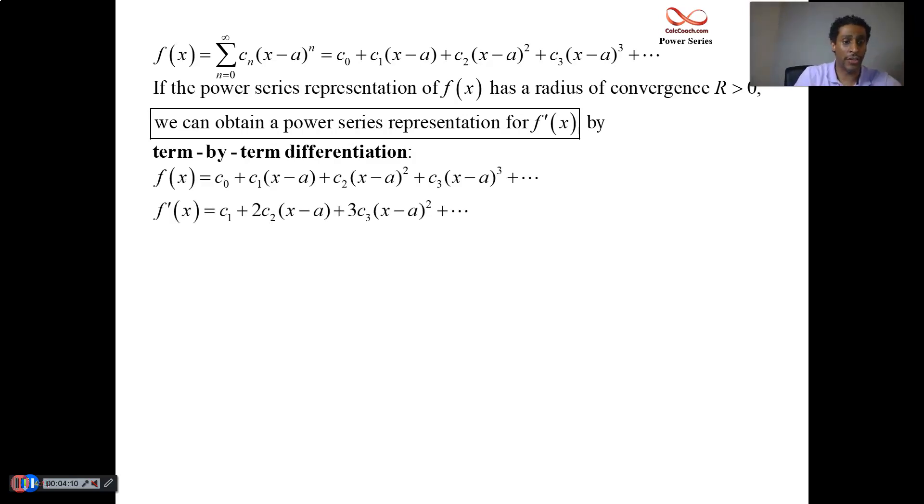There's our function. And then here's our derivative, the term by term part. C0's derivative is zero. But C1x's derivative is C1. The derivative of C2 times the quantity of x minus a squared is 2C2 times the quantity of x minus a. 3C3 times the quantity of x minus a squared, and so on forever.